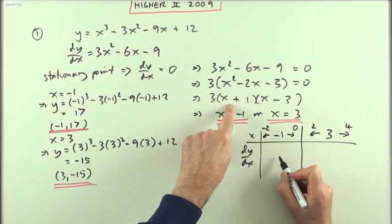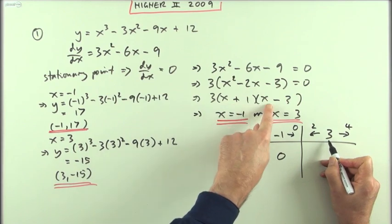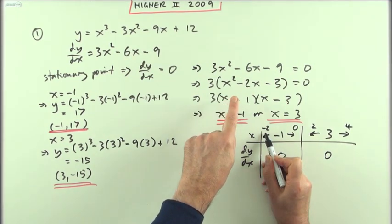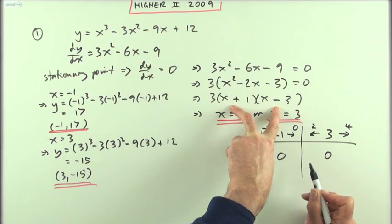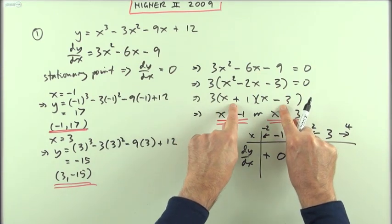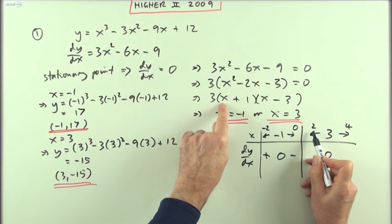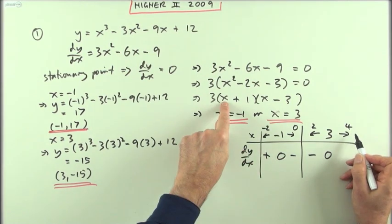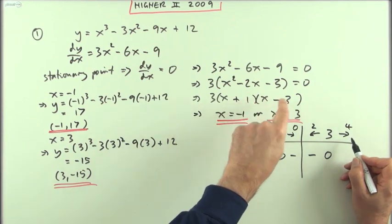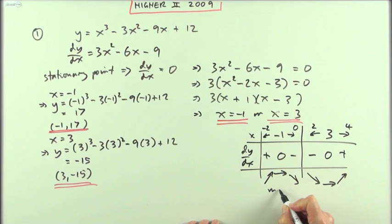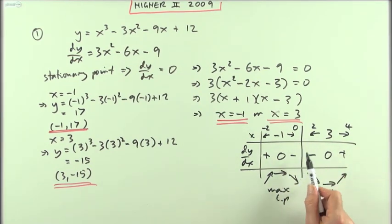At x = −1, that bracket is zero — zero times anything is zero. At x = 3, that bracket is zero. Now at x = −2: the (x+1) bracket is negative, the (x−3) bracket is also negative, so positive times negative times negative is positive. At x = 0: (x+1) is positive, (x−3) is negative, so the product is negative. At x = 4: both brackets are positive, so the product is positive. Going up, flat, down, down, flat, up — maximum turning point and minimum turning point.